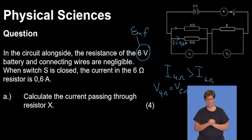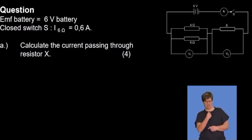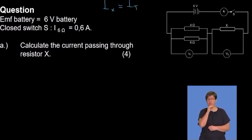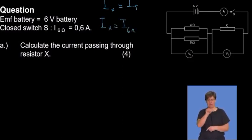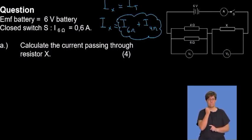The question says: calculate the current passing through resistor X. The current that passes through resistor X is actually the total current. So the current for resistor X equals the current that goes through six ohms, which we have, plus the current that goes through four ohms. Because these two are connected in parallel and are current dividers, we can find the voltage for six ohms, which equals the voltage across the four ohms.